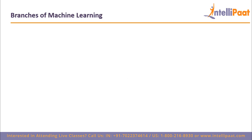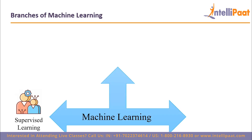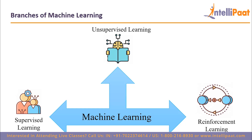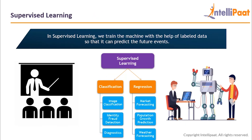Machine learning can be broadly classified into three categories: supervised learning, unsupervised learning, and reinforcement learning, which is the main topic for this course. In supervised learning, we train our machine on labeled data — we have both inputs and labels (the correct output). The machine learns from the right answers, and once it does, we supply it with new data and it predicts new labels for us.